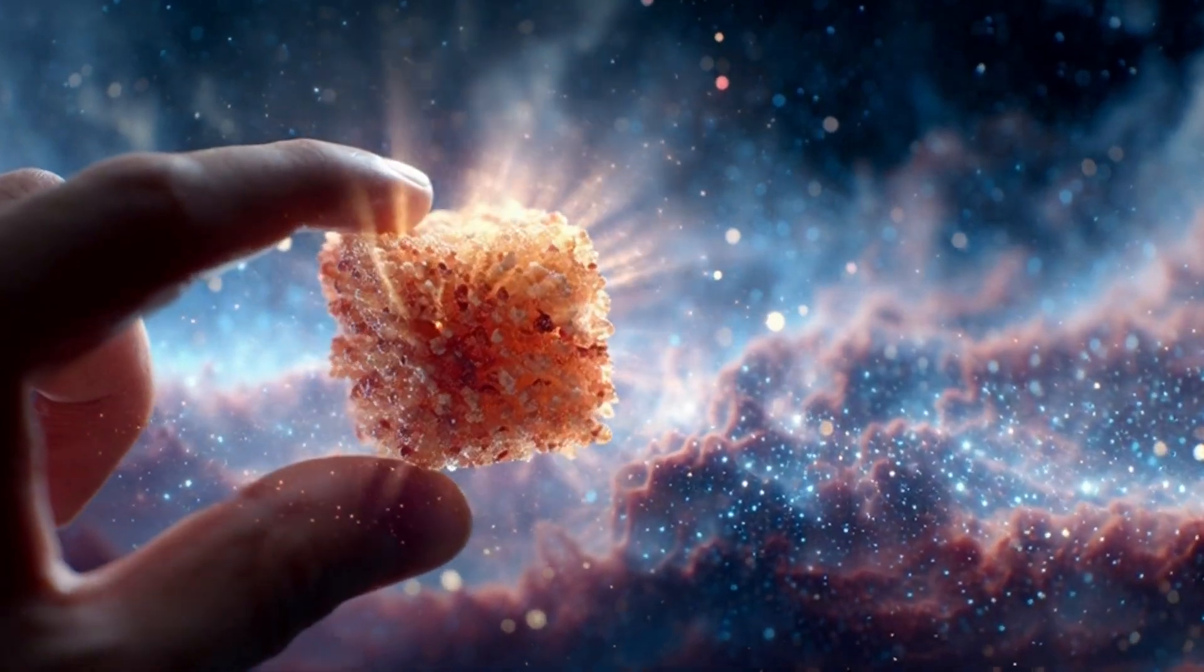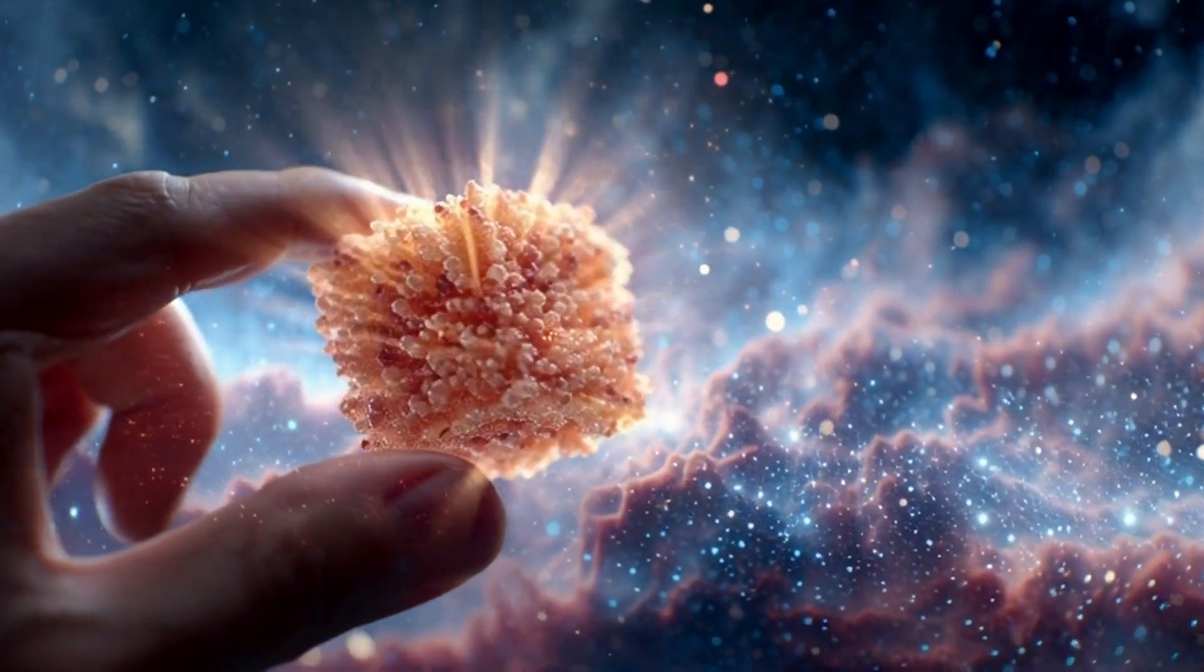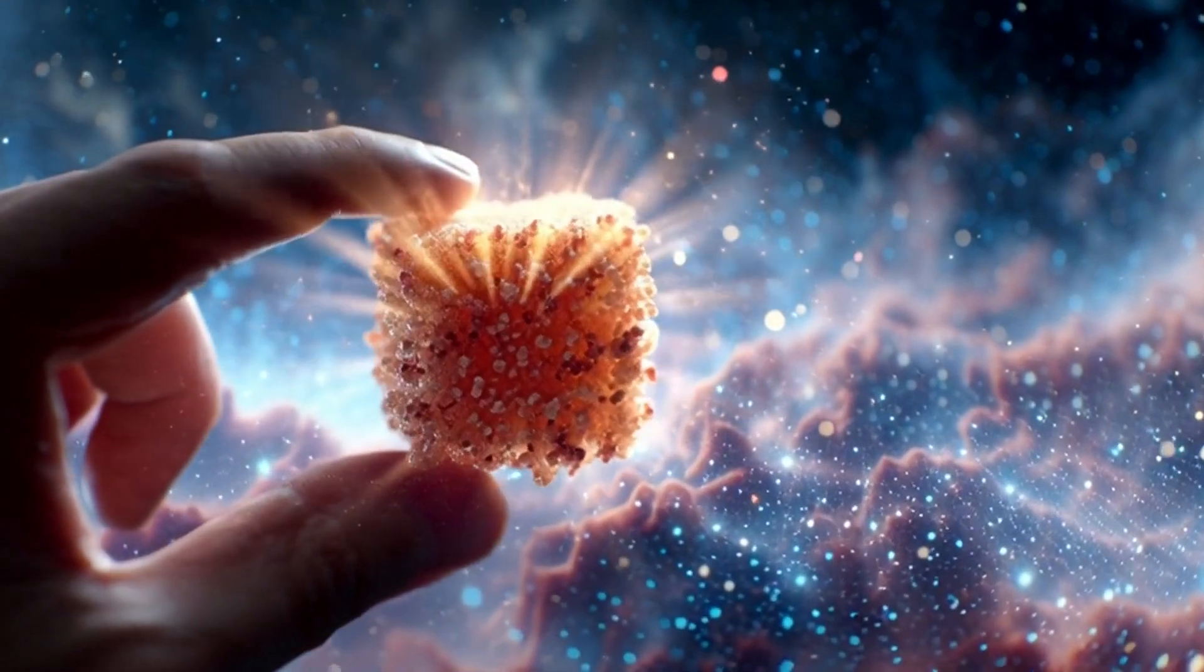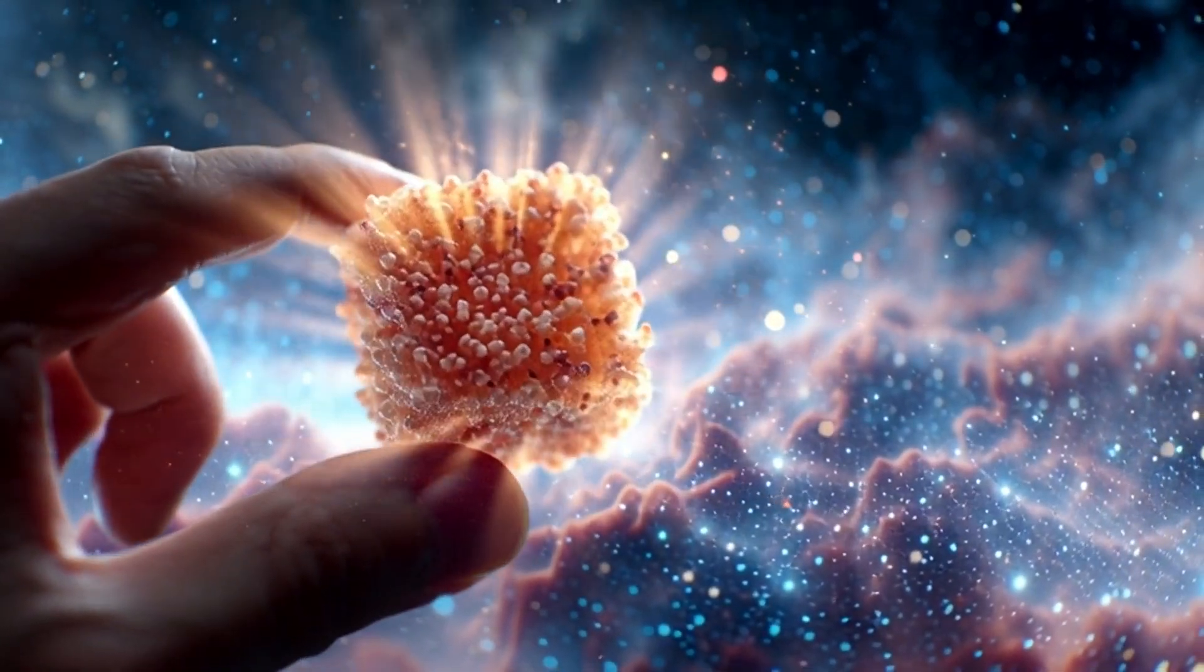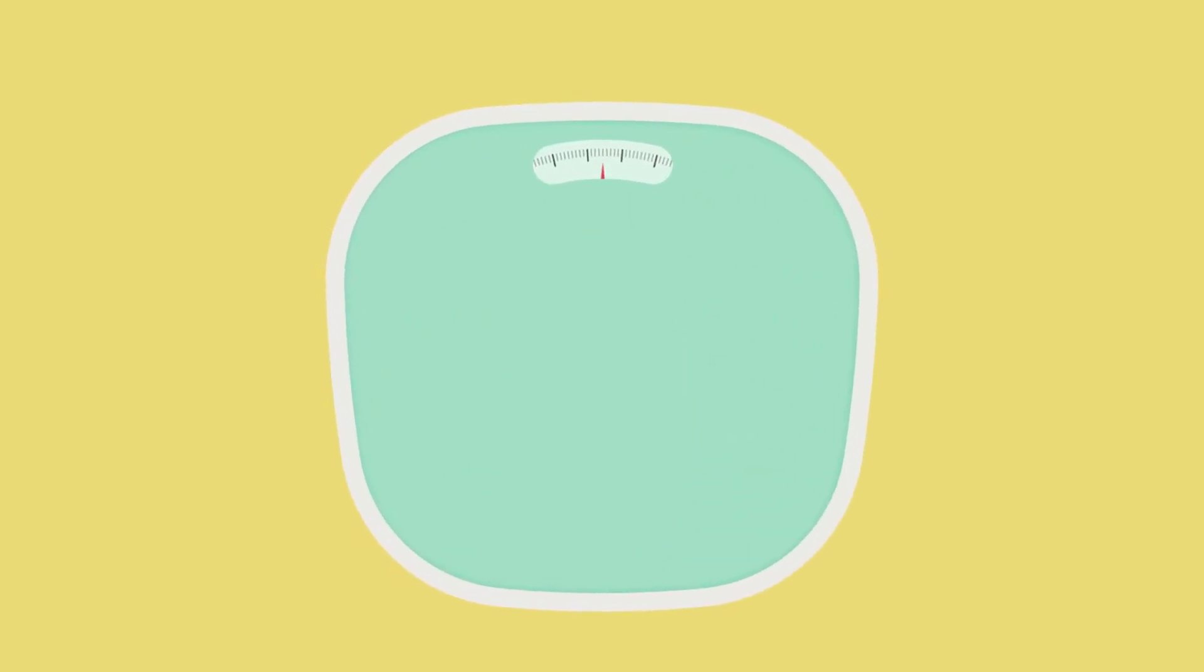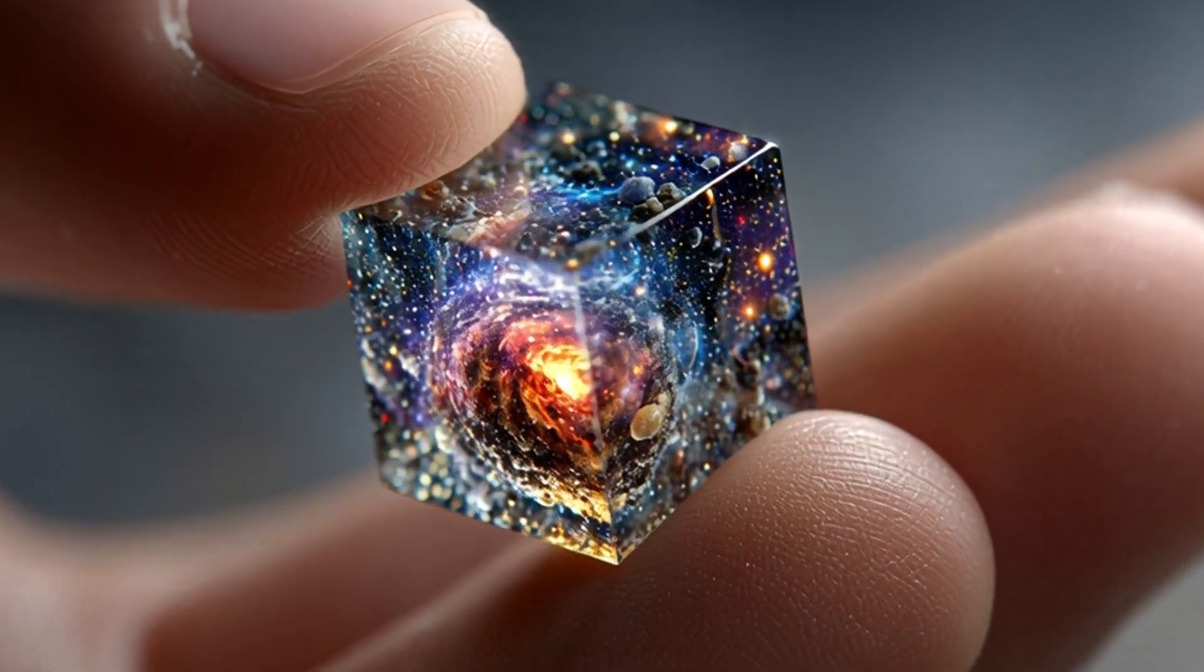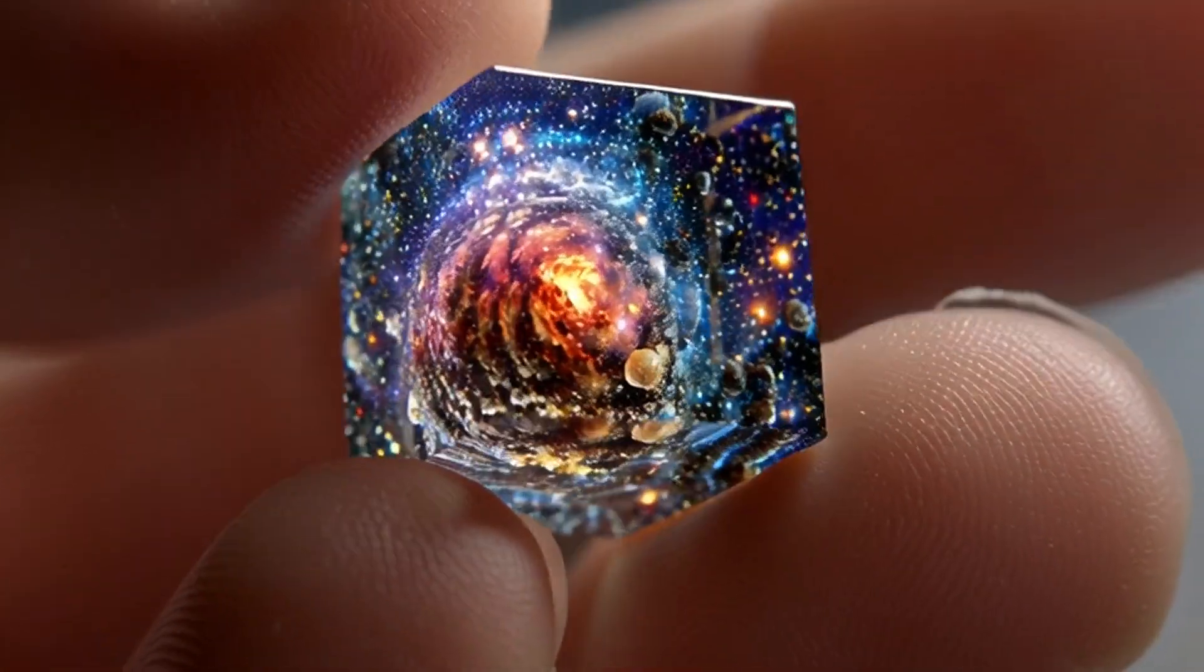To give perspective, one cubic centimeter of neutron star material, roughly the size of a sugar cube, weighs about 400 million tons. That's roughly the weight of every person on Earth times 50. And yet, all of that fits inside a cube small enough to balance on your fingertip.